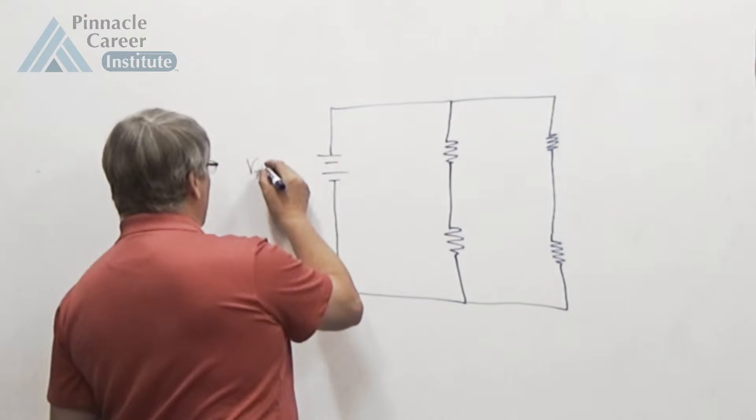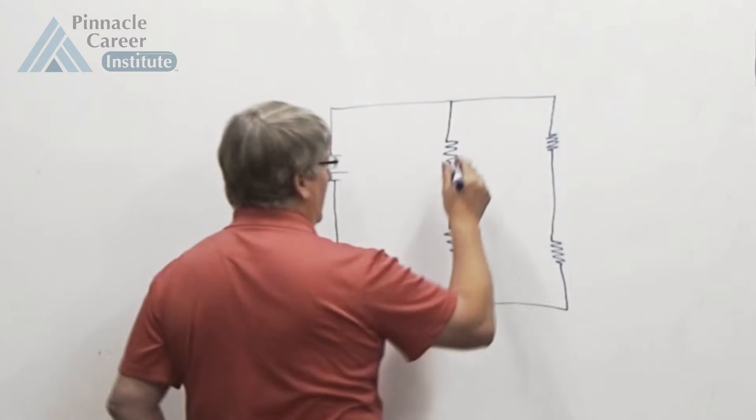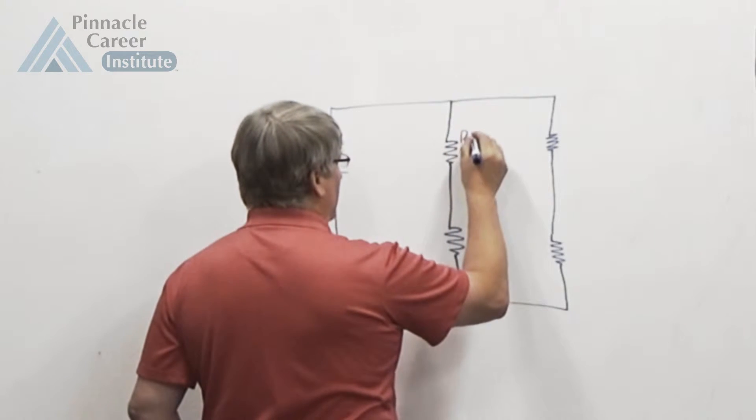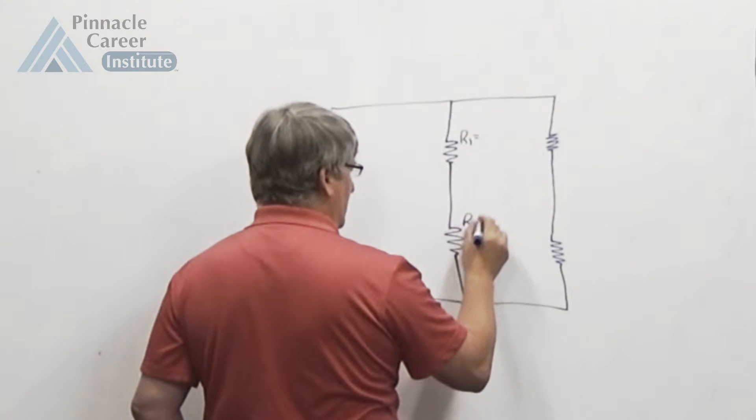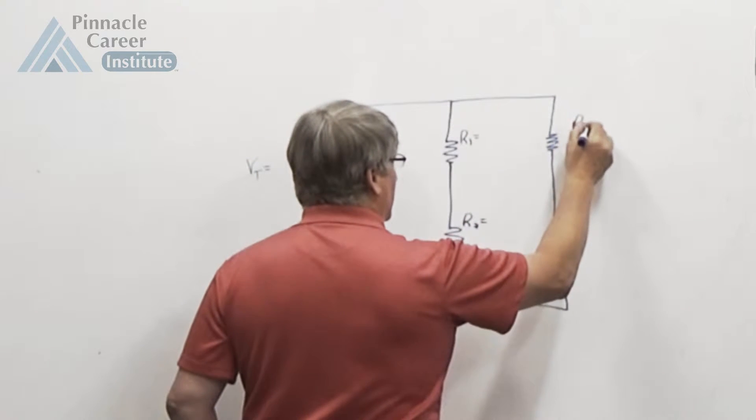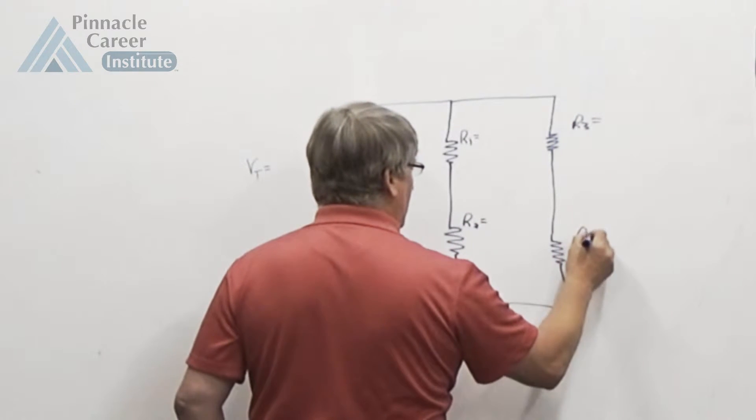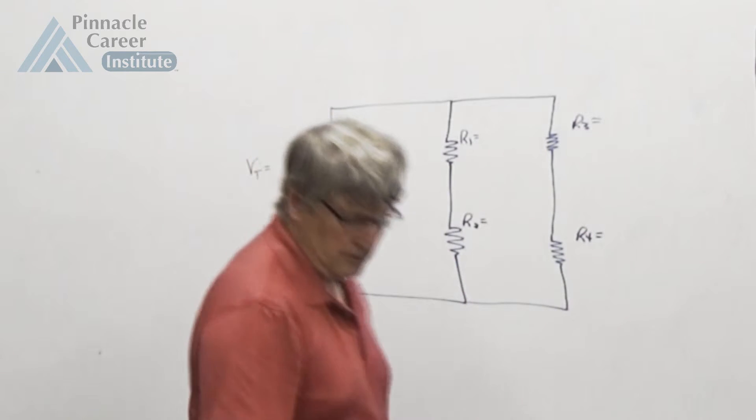So we've got voltage total, or VA for voltage allowance. We've got R1, R2, R3, R4, and again, let's see what they gave us.